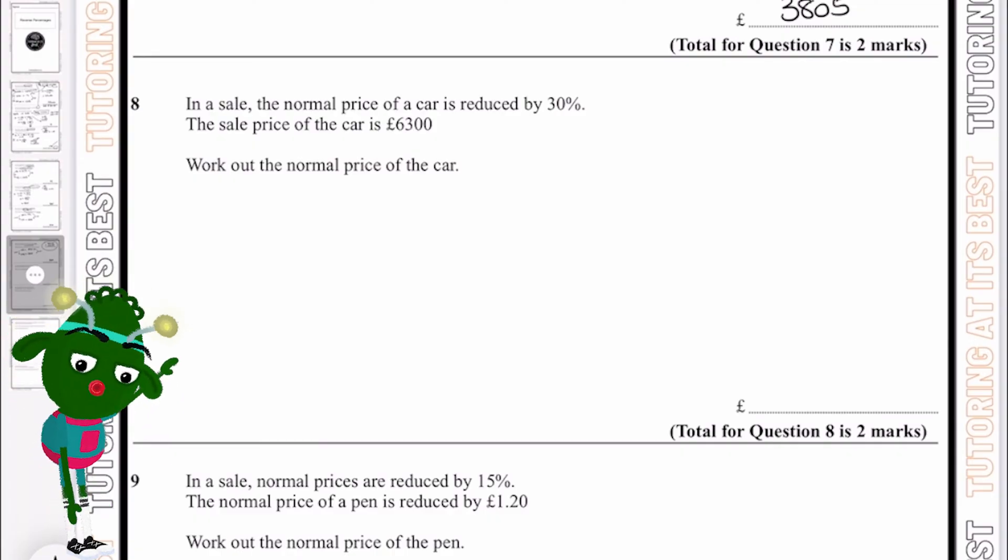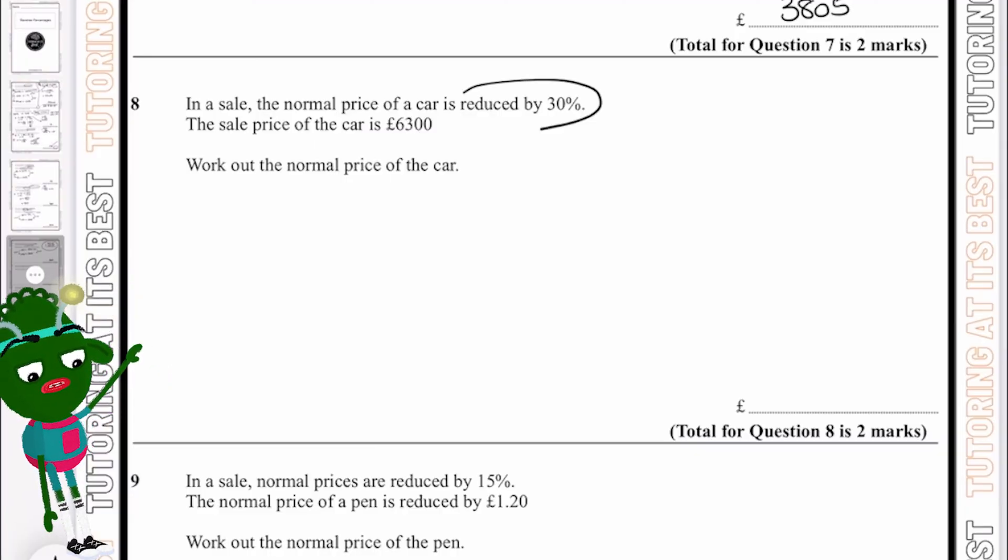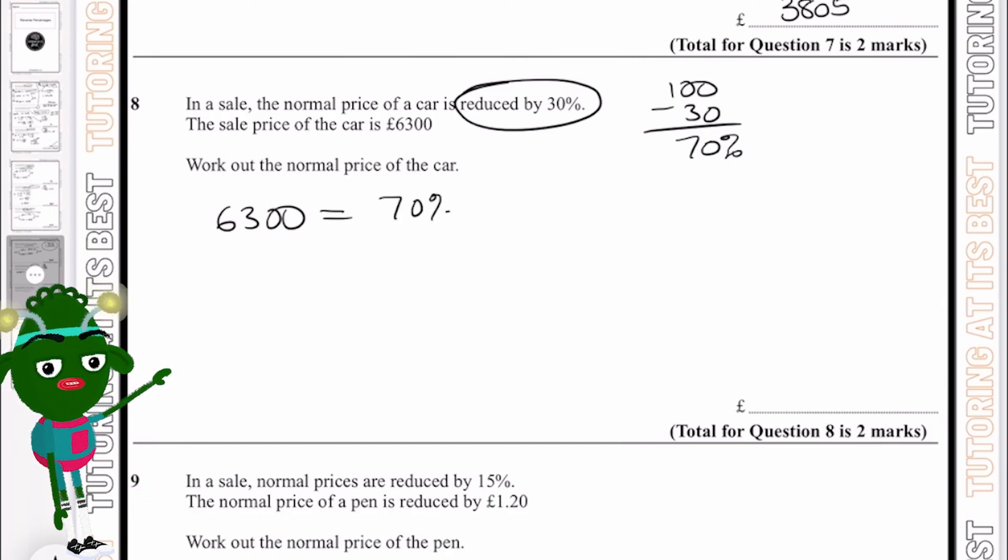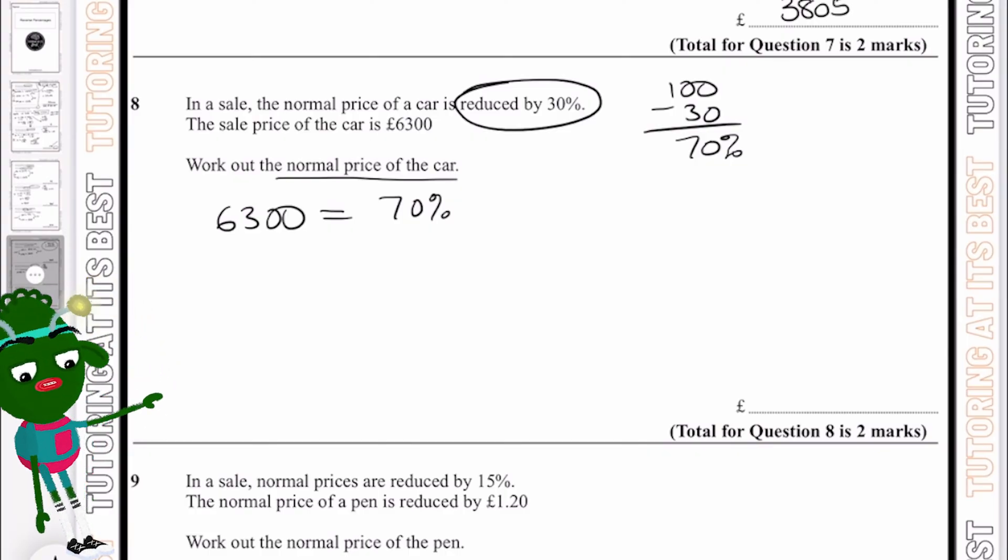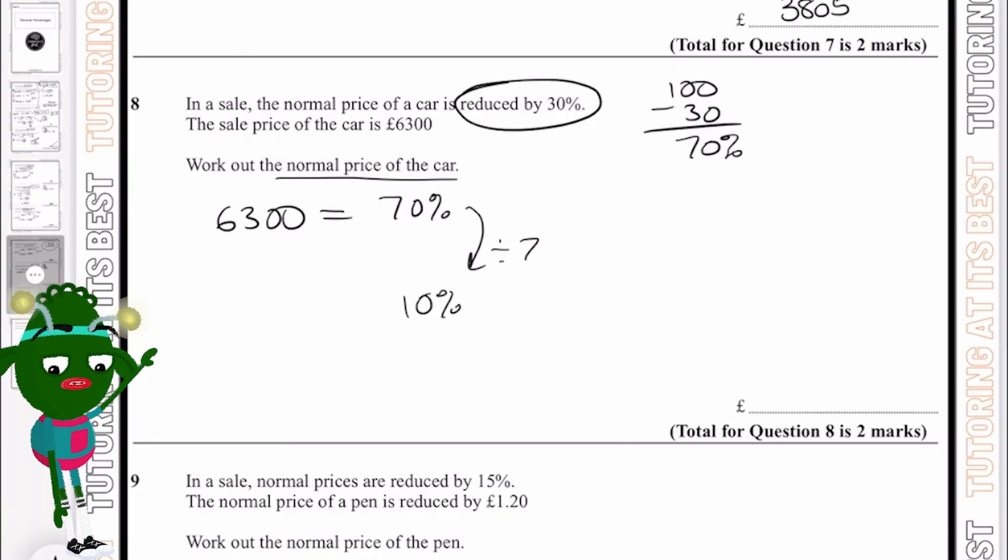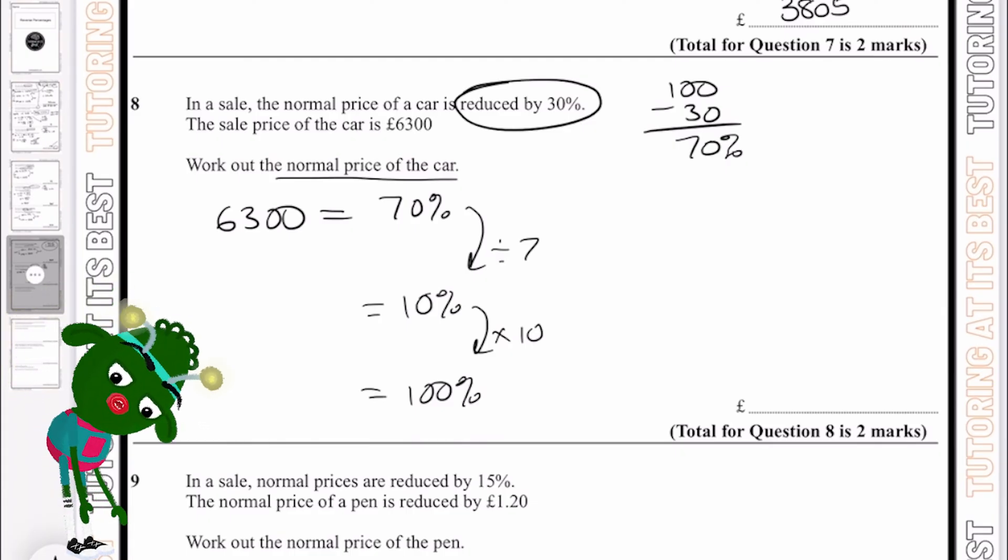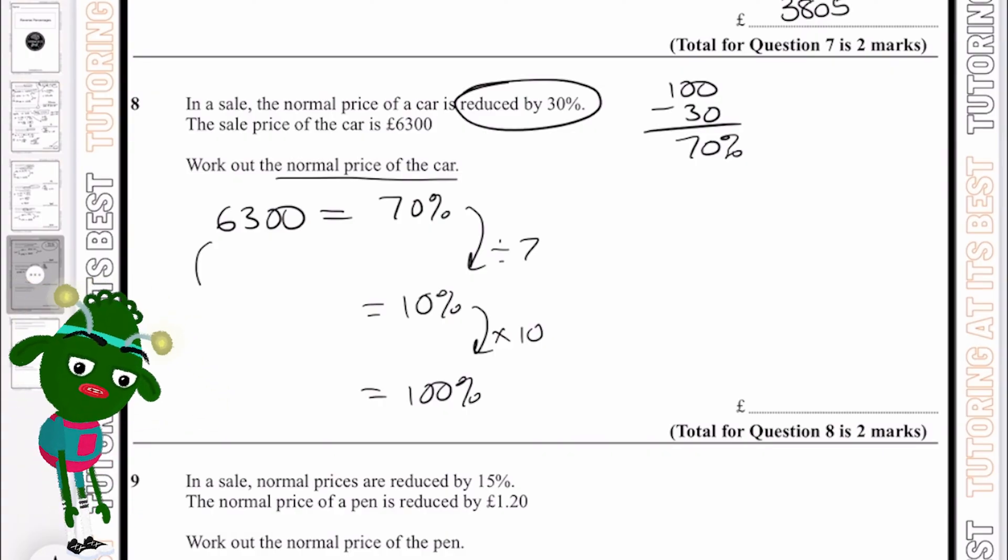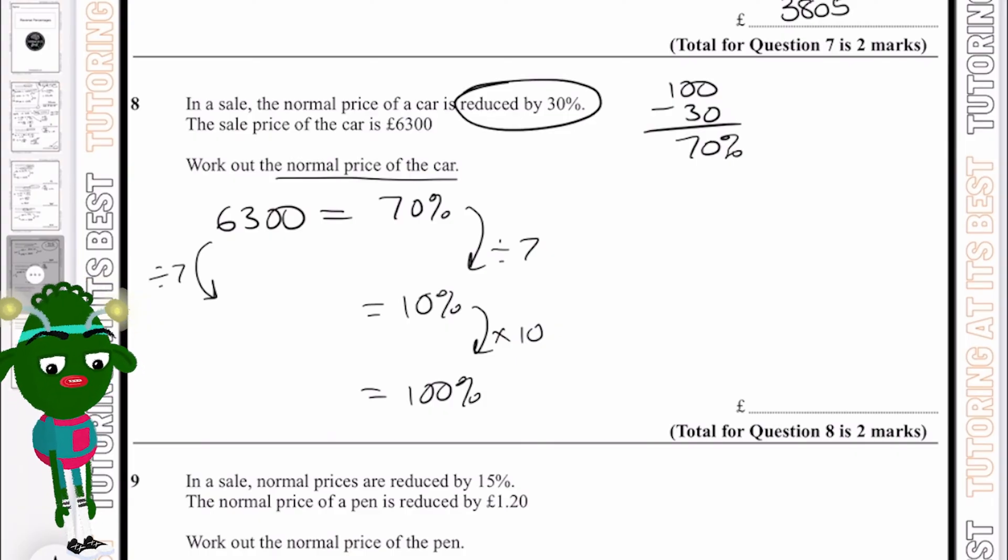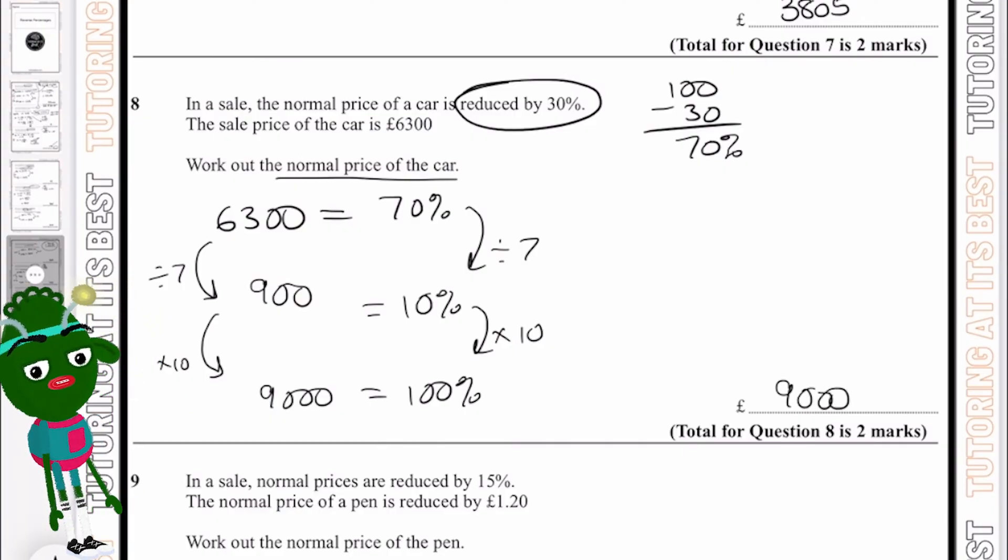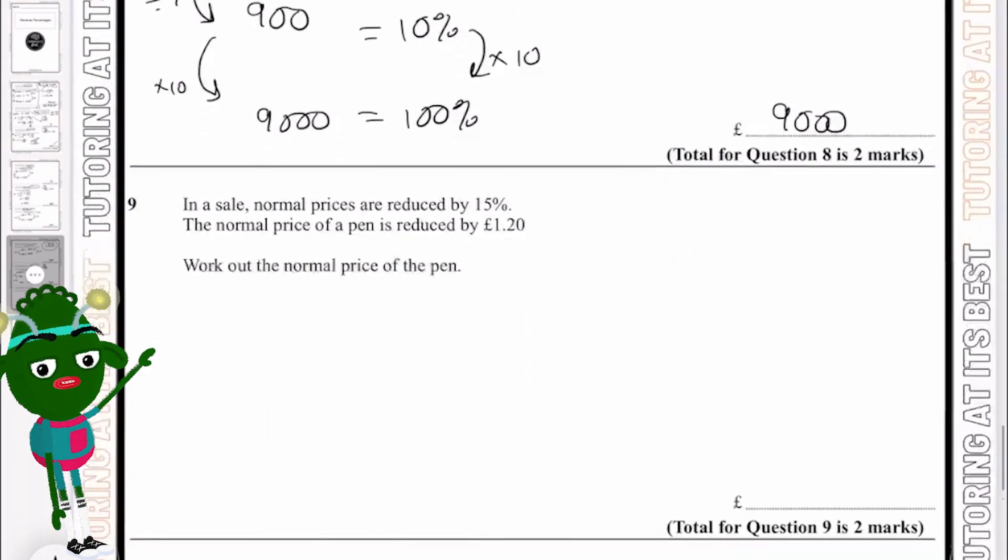Question number eight. In a sale, the normal price of a car is reduced by 30%, and the sale price of the car is £6,300. Work out the normal price of the car. So reduced by 30%, 100 take away 30 gives us 70%. So we now know that £6,300 is equivalent to 70%. We are going to work out the normal price which is 100%. Divide this by 7 which gives us 10%, and then times this by 10 which will give us 100%. We'll divide it by 7 which will give us £900, and then times it by 10 which will give us £9,000. So the price of the car was £9,000 before it went on sale.